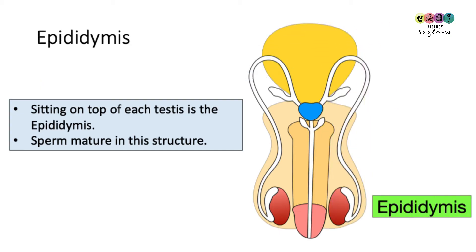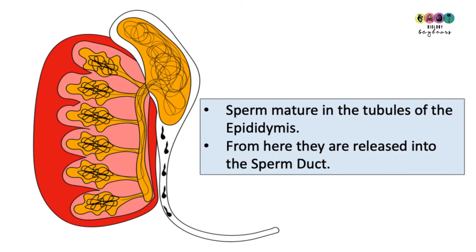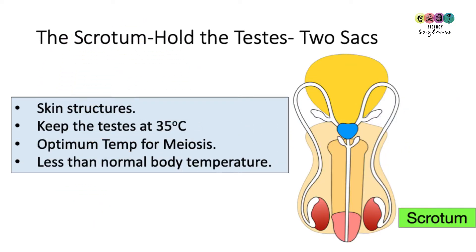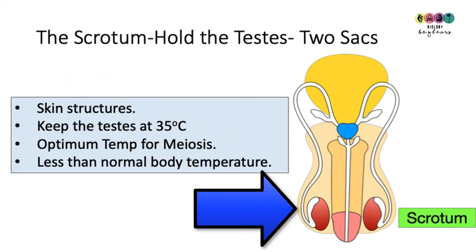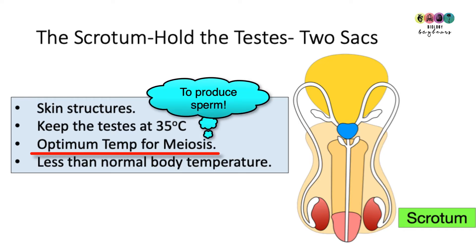Sitting on top of the testes is the epididymis, and it's in this structure where the sperm are stored and where they mature. Once the sperm have matured in the epididymis they're released and enter into the sperm duct. The testes are located in the scrotum, two sac-like skin structures which hold the testes and keep them at around 35 degrees Celsius — a temperature that's optimal for meiosis, lower than body temperature, so that sperm can be produced.